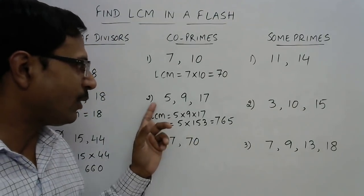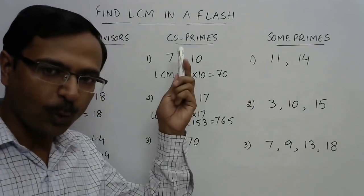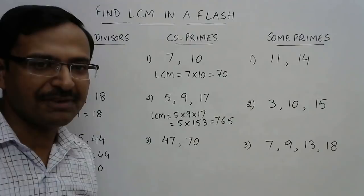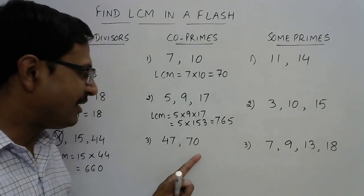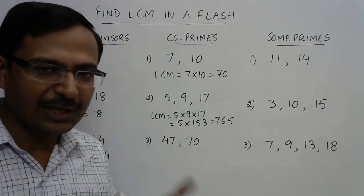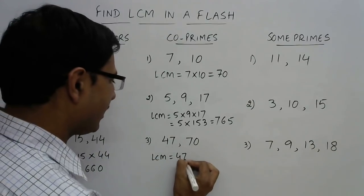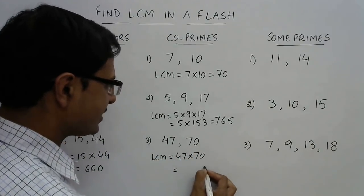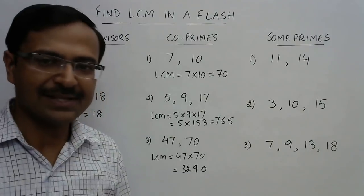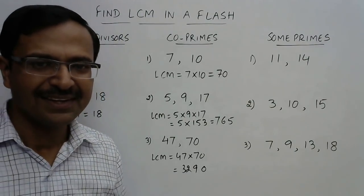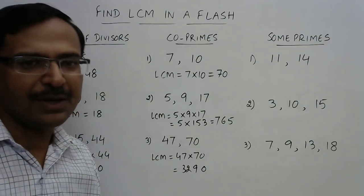So 765 is the LCM of 5, 9, and 17. Let's apply it to 47 and 70. Since 47 is a prime number and is not divisible by any number, 70 and 47 will obviously not have any common factor — so their LCM equals their product: 47 × 70 = 3290. Isn't it easy, friends? With knowledge of some basic things about LCM, you are ready with your answer just by giving a glance at the question.